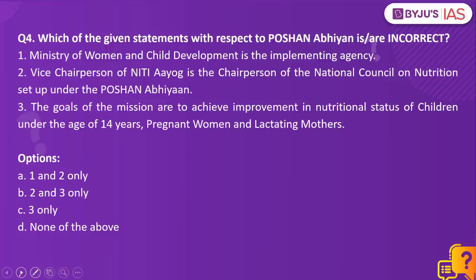Moving on to question number four: Which of the given statements with respect to POSHAN Abhyan is or are incorrect? Statement one: Ministry of Women and Child Development is the implementing agency. Statement two: Vice Chairperson of Niti Aayog is the chairperson of the National Council on Nutrition set up under POSHAN Abhyan. Statement three: The goal of the mission is to achieve improvement in nutritional status of children under the age of 14 years, pregnant women and lactating mothers.